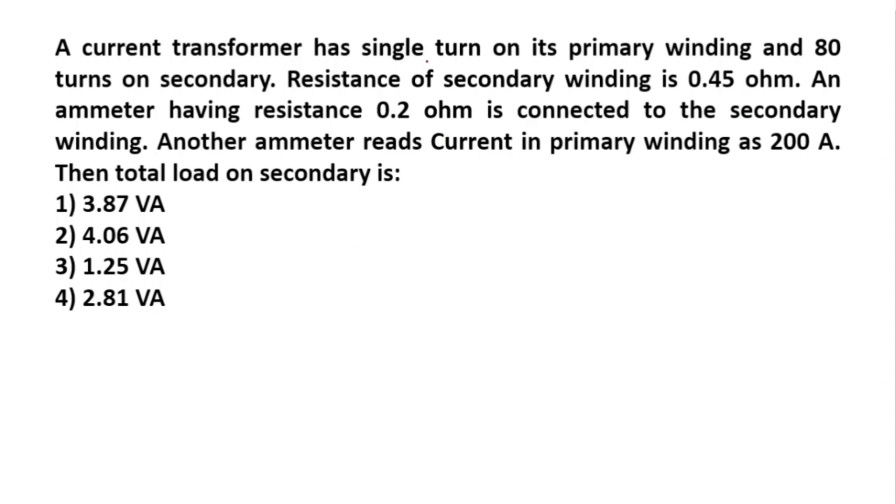So, given single turn on primary, N1 equals 1, and 80 turns on secondary, so N2 equals 80. Then resistance of secondary winding, R2 equals 0.45 ohm.